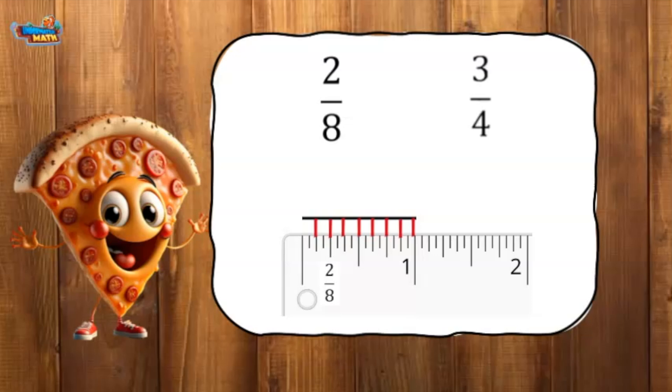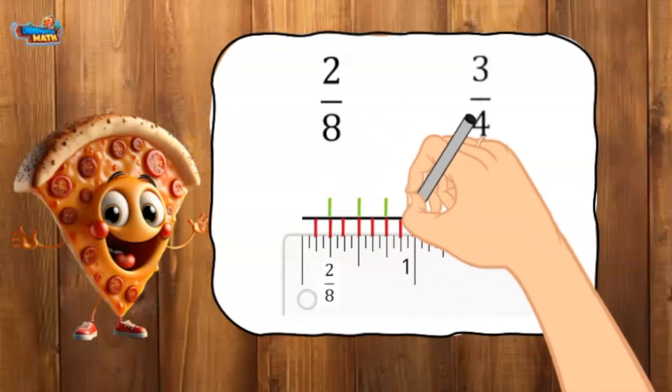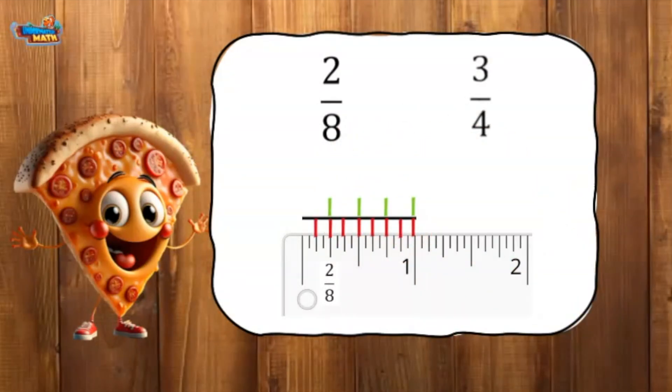On the top of the number line, I label each fourth of an inch, because the denominator of the second fraction is four. The numerator is three. I label the third fourth marked on the top of the number line with three-fourths.